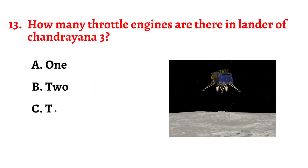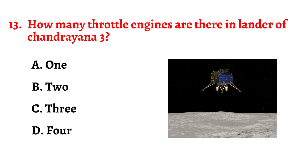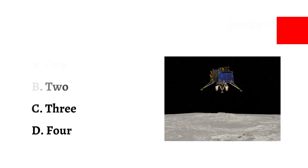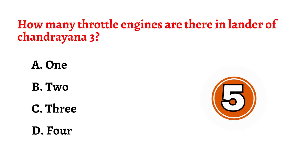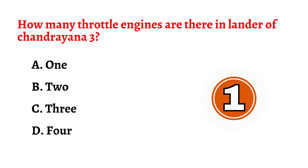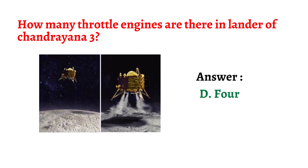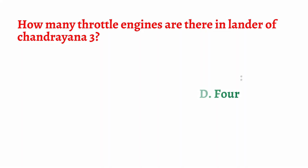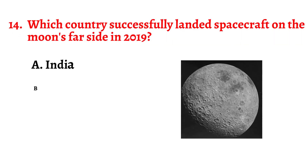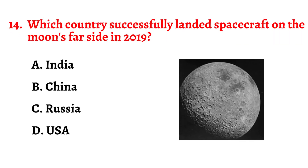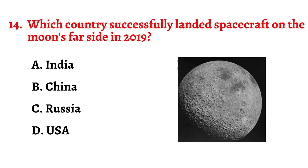Question number thirteen: How many throttle engines are there in the lander of Chandrayaan 3? The correct answer is option D: four throttle engines.